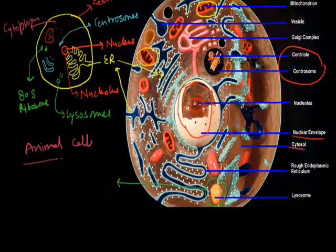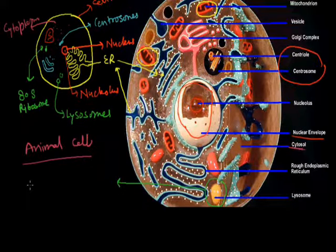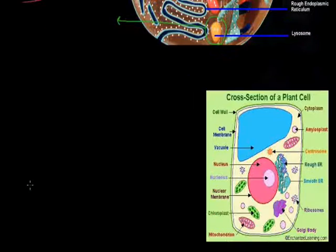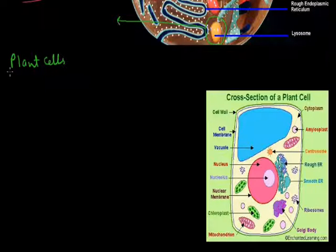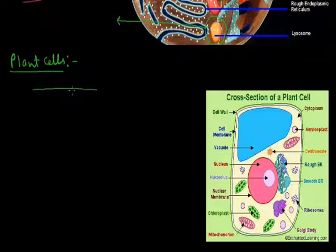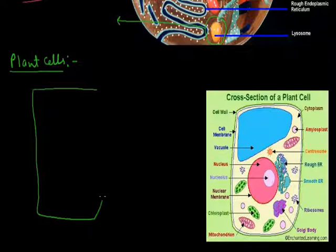Now we discuss the plant cell. The unique feature of the plant cell is that it has an outermost layer we call the cell wall. This is the outermost layer in the plant body, and it is made up of cellulose.